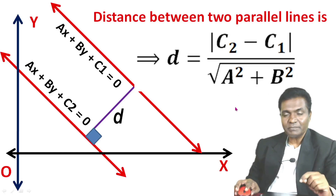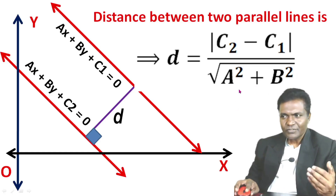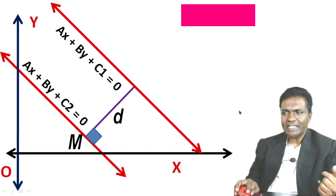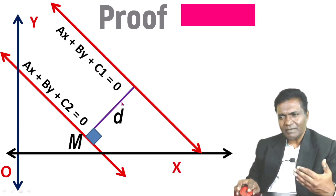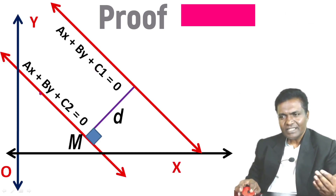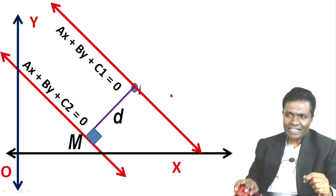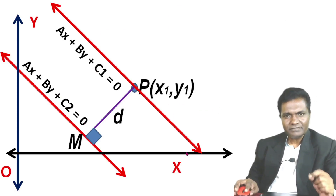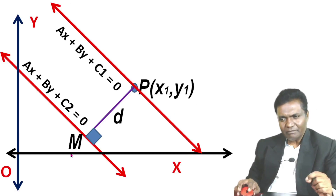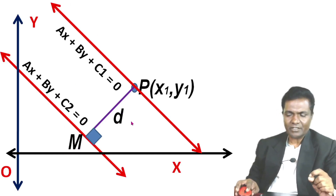Now consider the derivation for the distance between parallel lines. Consider these two lines: ax plus by plus c1 equal to zero, and ax plus by plus c2 equal to zero. These are two parallel lines. Consider a point P(x1, y1) on the first line, and draw PM perpendicular to the second line — this PM is the shortest distance between the two lines.